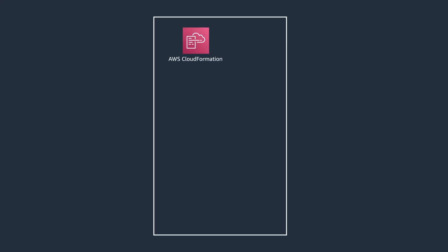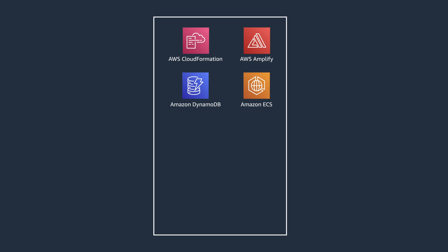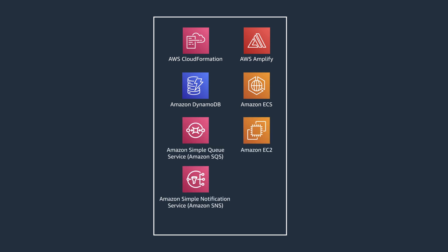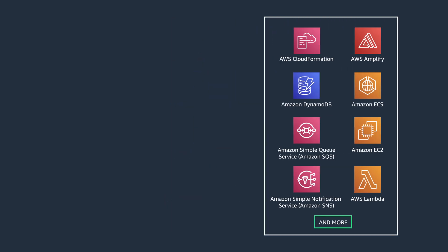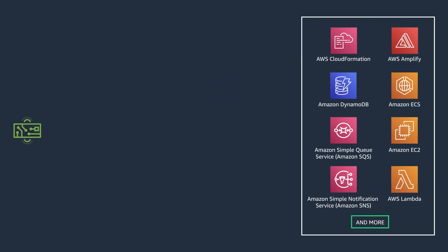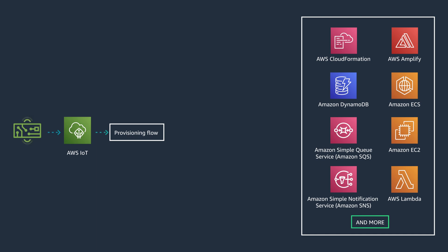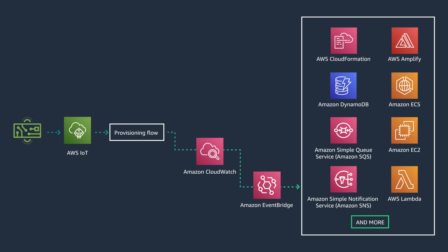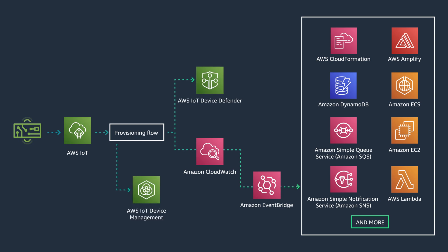That integration helped me to solve another challenge. In my use case, the application cloud resources, such as the databases and EC2 instances, should only be provisioned upon a new device registration. In this case, the provisioning event can be used to trigger calls to other services, and therefore provision resources for you. EventBridge and CloudWatch can be used to optimize those actions. Also, by using AWS IoT Device Defender and AWS IoT Device Management, your device certificate rotation and firmware updates can be scheduled and monitored.